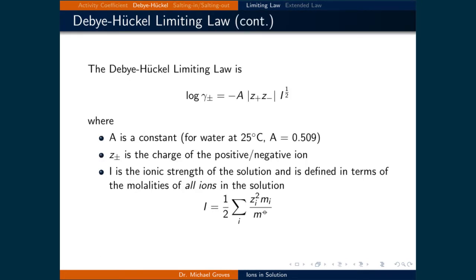For small ionic concentrations, we can employ the Debye-Huckel limiting law to calculate the average activity coefficient, since it is equal to: the log of the average activity coefficient equals negative A times the absolute value of z-plus times z-minus times I raised to the power of one half, where A is a constant. For water at 25 degrees Celsius, A is equal to 0.509. Z-plus and z-minus are the charges of the positive and negative ions, respectively. I is the ionic strength of the solution, defined as one half times the sum over all charged particles i of z_i squared times the molality of species i divided by the standard molality.